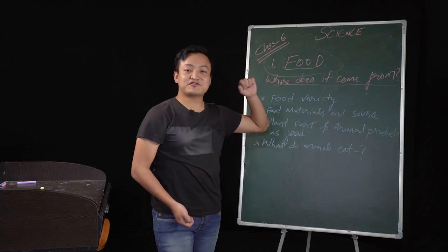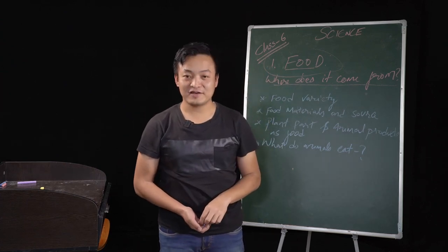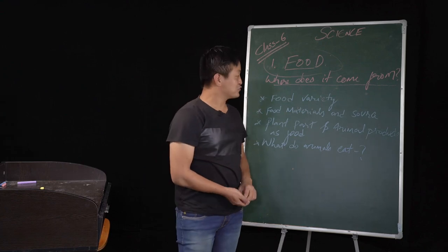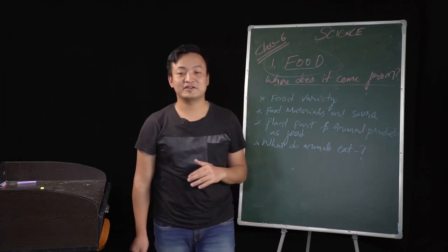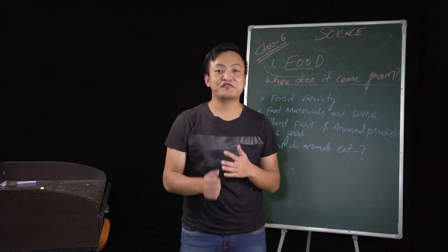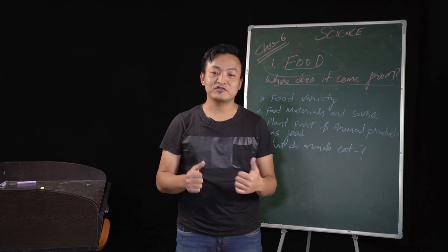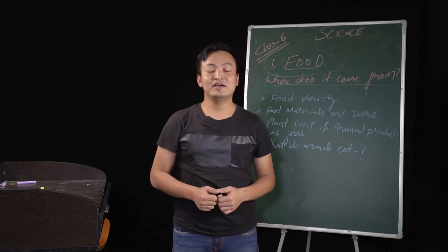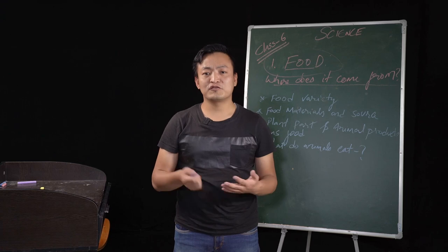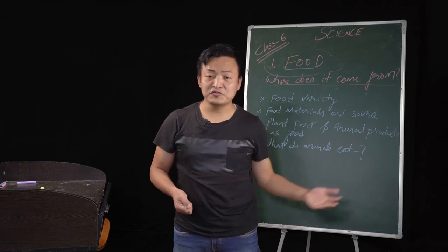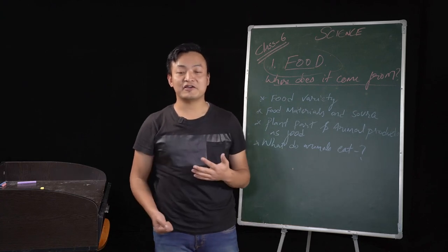So the name of the chapter is Food: Where Does It Come From? To start this chapter, first we'll start with food variety, and here we have to do some activity as well to know the food variety. Food is very essential for all of us. Without food, we won't have energy because from food we get nutrients. We get energy to do our daily life, to carry the life processes.